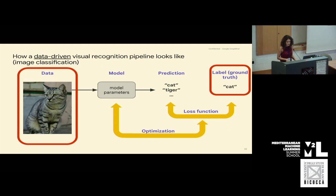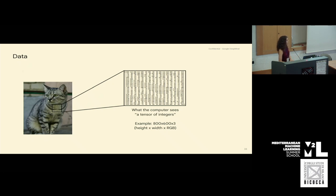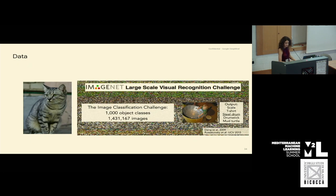Starting with the data: in computer vision, our input is typically images, or videos, or other visual data. It's usually a tensor of integers, and for the case of an image, its shape is height by width by channel. In colored images it's usually three channels — red, green, blue — or if it's a grayscale image, a single channel is usually sufficient. In the case of supervised learning, it's important that a large-scale annotated dataset is available, and ImageNet is a widely used dataset in that sense.